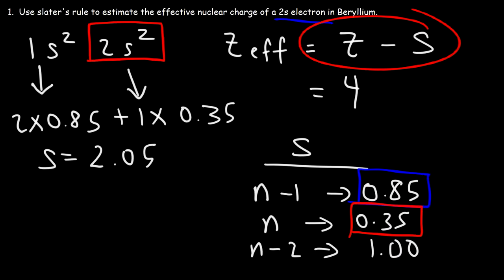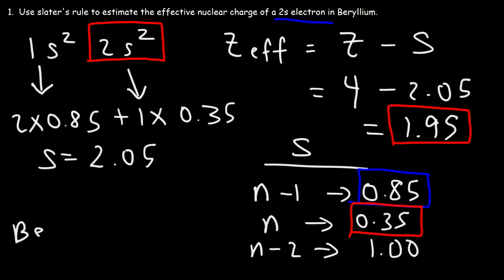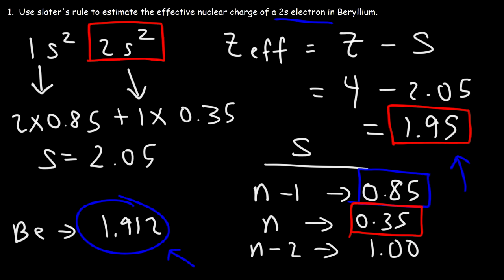Going back to the equation Z minus S, S is 2.05, so 4 minus 2.05 is 1.95. This is the effective nuclear charge for a 2s electron in beryllium based on Slater's rule. If you go to Wikipedia and look up the effective nuclear charges for beryllium, for the 2s electron you'll see a value of 1.912. So as we can see, this is a good estimate compared to the actual reported value.